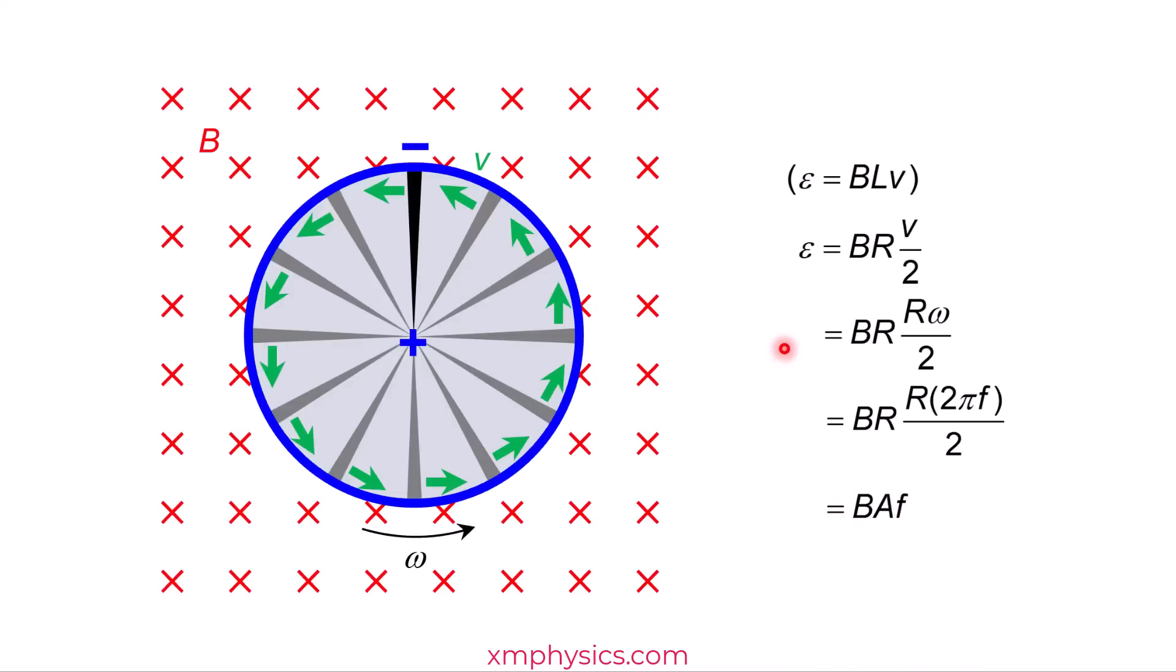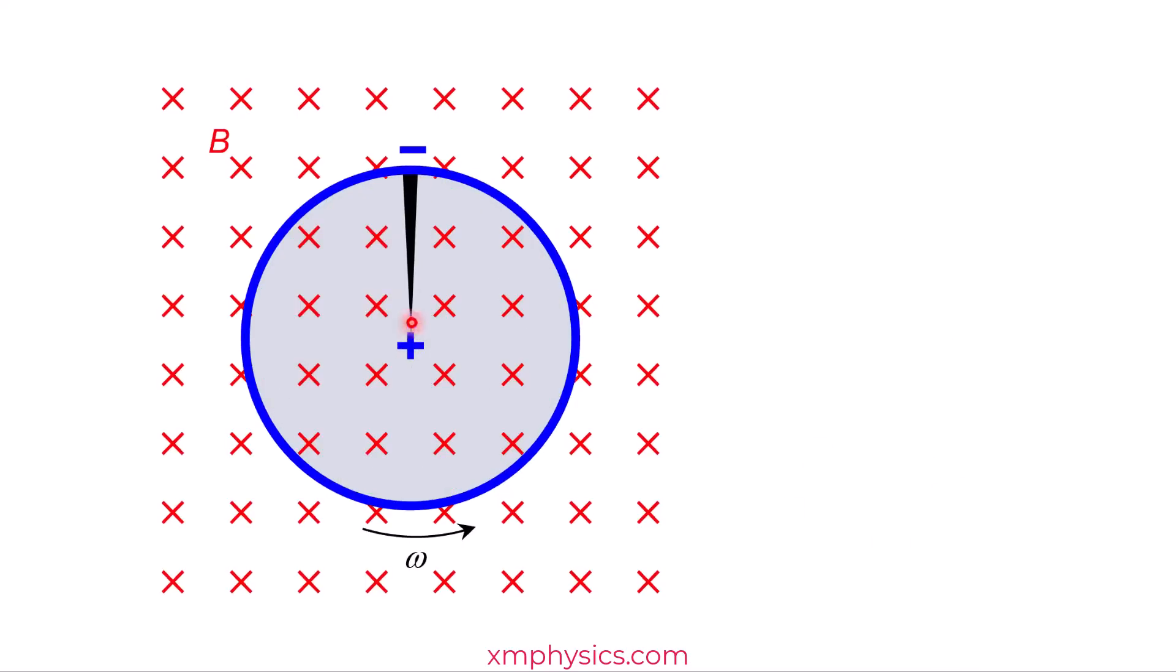Now this is quite satisfying, isn't it? But let me show you an even faster method to derive BAf. Consider this wire here. As the disc rotates, doesn't it sweep out this area? So this is the amount of magnetic flux cut by this wire.